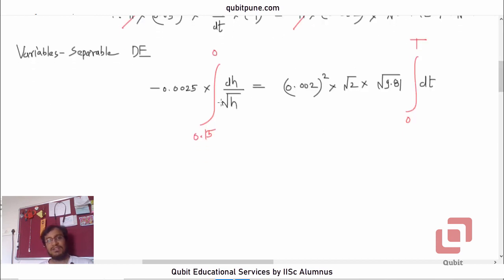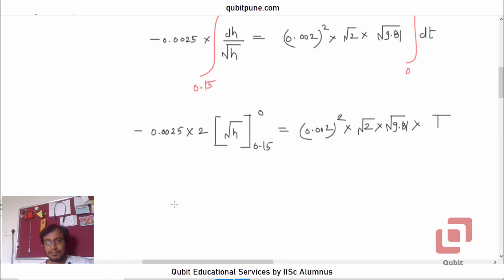Let us remind ourselves that integral of 1/(2√h) will be √h. So it will be -0.0025 × 2 × √h with lower limit 0.15, upper limit 0, equals (0.002)² × √2 × √9.81 × t. So what will t be now? t will be equal to 0.0025 × 2 × √0.15 divided by (0.002)² × √2 × √9.81.